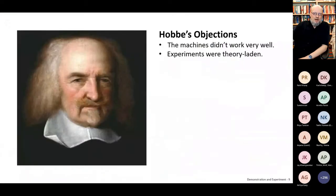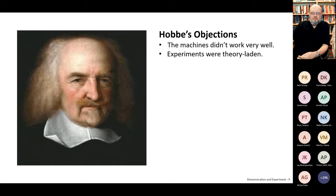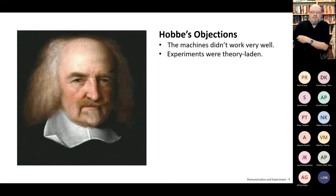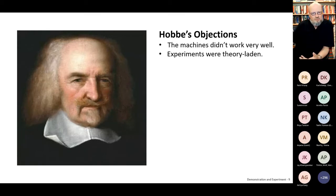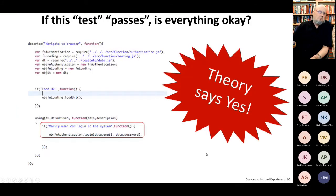Another objection Hobbes had was that experiments were theory-laden — based on a theory. What he was saying was: your tools and demonstrations are not really experiments, because what you're doing is demonstrating that the theory is true. It's used to corroborate the idea that the theory works. How do you know the theory works? Because the demonstration comes off successfully. How do you know what success is supposed to be? Because it's in line with the theory. This is a lot like the modern day too.